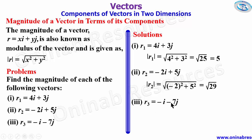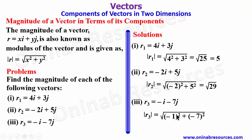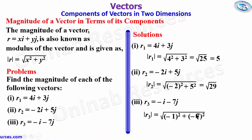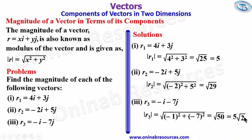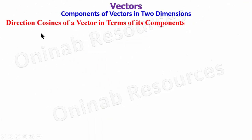For r3, we have r3 = -i - 7j. The modulus of r3 is √((-1)² + (-7)²). The coefficient of i is -1 and the coefficient of j is -7. So that gives us √(1 + 49) = √50 = 5√2. That's all for the magnitude of a vector in terms of its components.